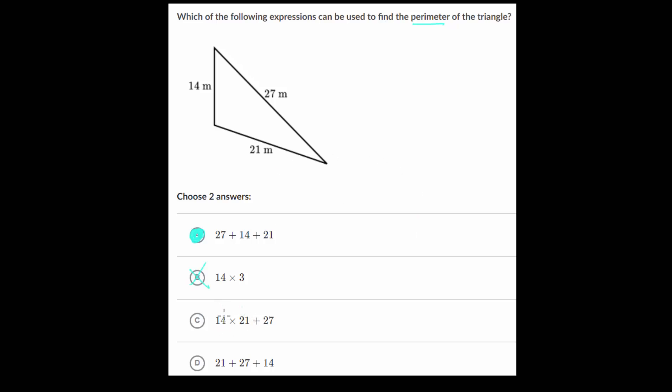14 times 21 is going to give us a very large number and then adding 27 to that. So this should be a plus sign—that is not correct either. And then choice D is correct since we're just changing the order. Remember with addition, you can change the order since 3 plus 2 will give you the same answer as 2 plus 3.